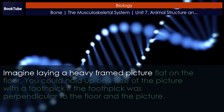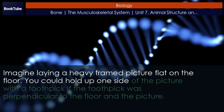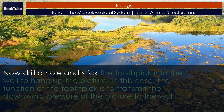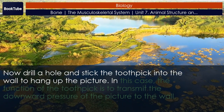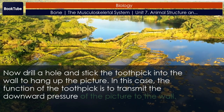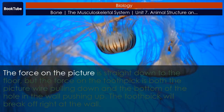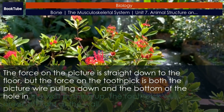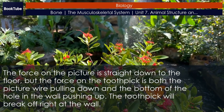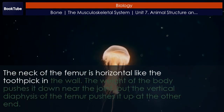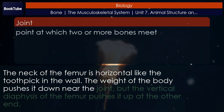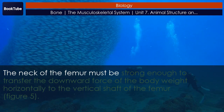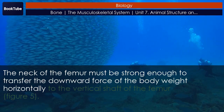Imagine laying a heavy framed picture flat on the floor. You could hold up one side of the picture with a toothpick if the toothpick was perpendicular to the floor and the picture. Now drill a hole and stick the toothpick into the wall to hang up the picture. In this case, the function of the toothpick is to transmit the downward pressure of the picture to the wall. The force on the picture is straight down, but the force on the toothpick is both the picture wire pulling down and the bottom of the hole in the wall pushing up — the toothpick will break off right at the wall. The neck of the femur is horizontal like the toothpick in the wall. The weight of the body pushes it down near the joint, but the vertical diaphysis of the femur pushes it up at the other end. The neck of the femur must be strong enough to transfer the downward force of the body weight horizontally to the vertical shaft of the femur.